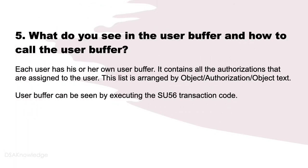What do you see in the user buffer and how do you call it? Each user has their own user buffer. It contains all the authorizations that are assigned to the user. This list is arranged by object, authorization, or object text. The user buffer can be viewed by executing the SU56 transaction code.